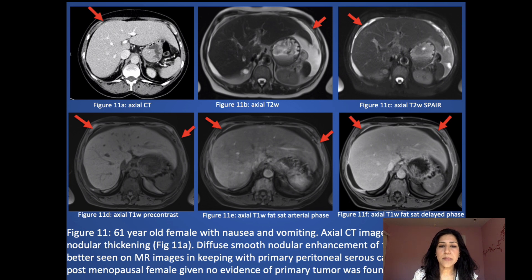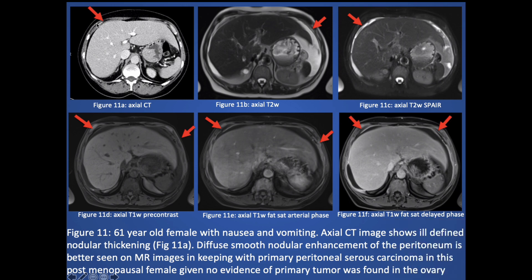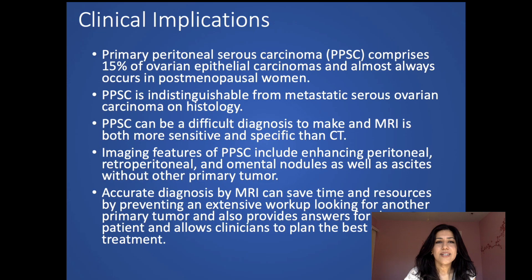This is a 61-year-old female — as you notice, all these patients are postmenopausal. The axial CT shows ill-defined nodular thickening, which is better characterized on the MR images. There is diffuse smooth nodular enhancement on the post-contrast images, consistent with primary peritoneal serous carcinoma, given no evidence of primary tumor in the ovaries.